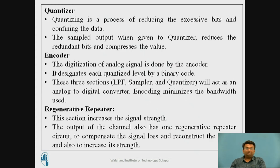The quantizer is used to reduce excessive bits and confine the data. The sampler output given to the quantizer reduces redundant bits and compresses the value. The encoder digitizes the analog signal and designates each quantizer value by a binary code.